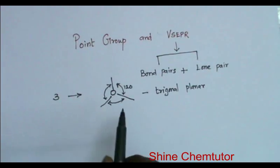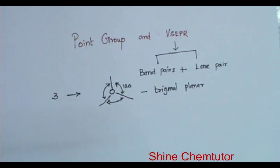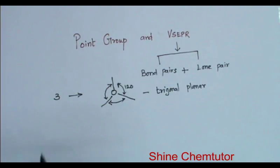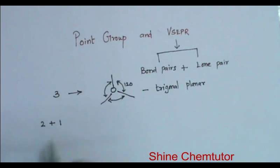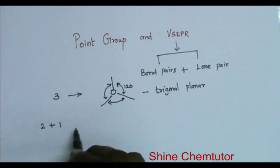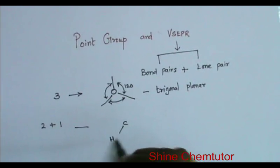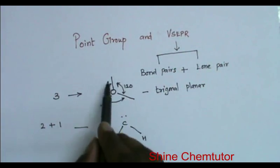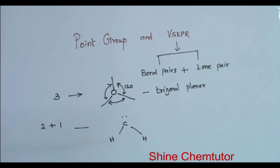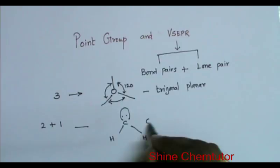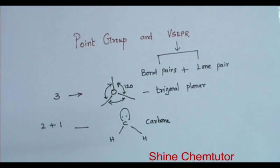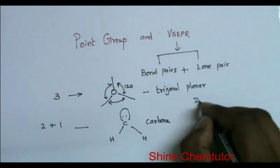It need not always be three bond pairs. One bond pair can be replaced with one lone pair — so two bond pairs and one lone pair. In such a case, one bond has been replaced with a lone pair, giving us carbene, which has a bent shape or V-shape. What will be the point group of trigonal planar? The point group is D3H.